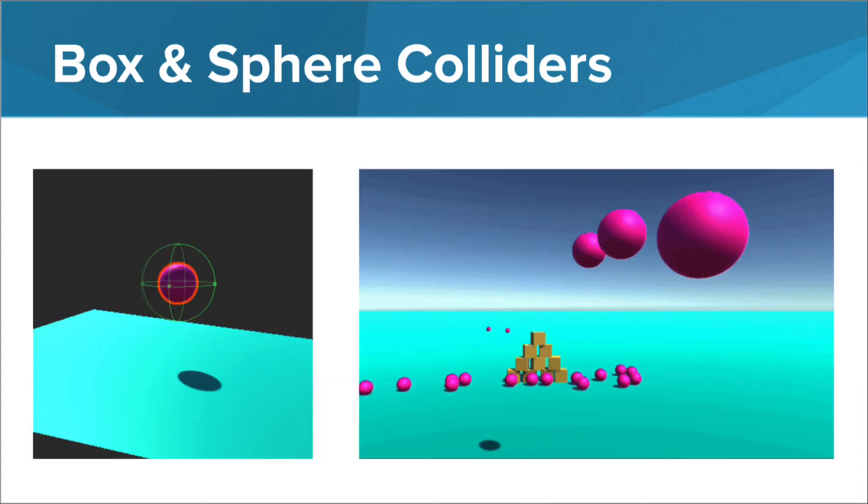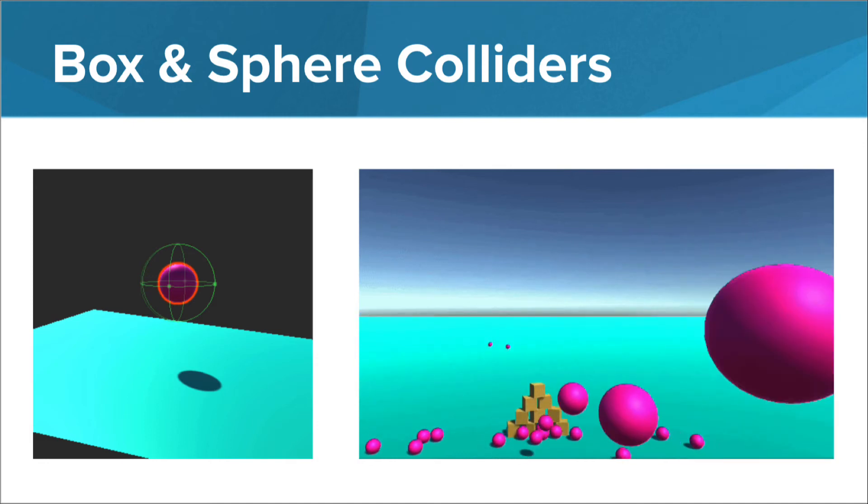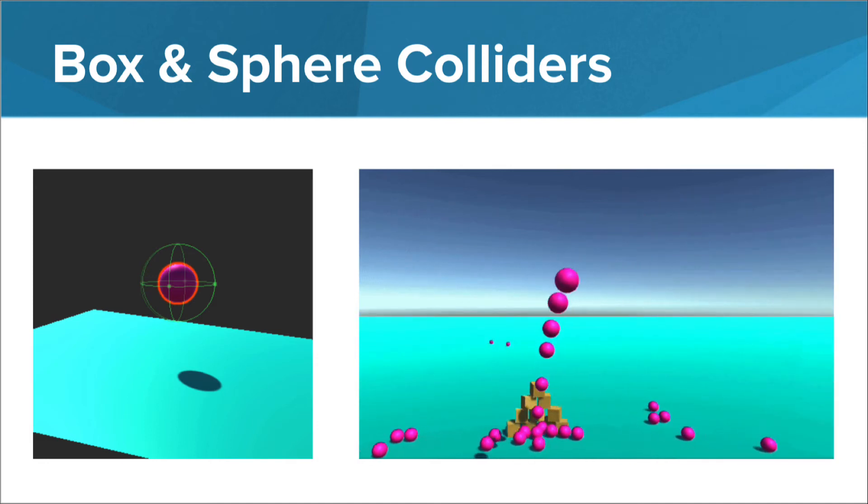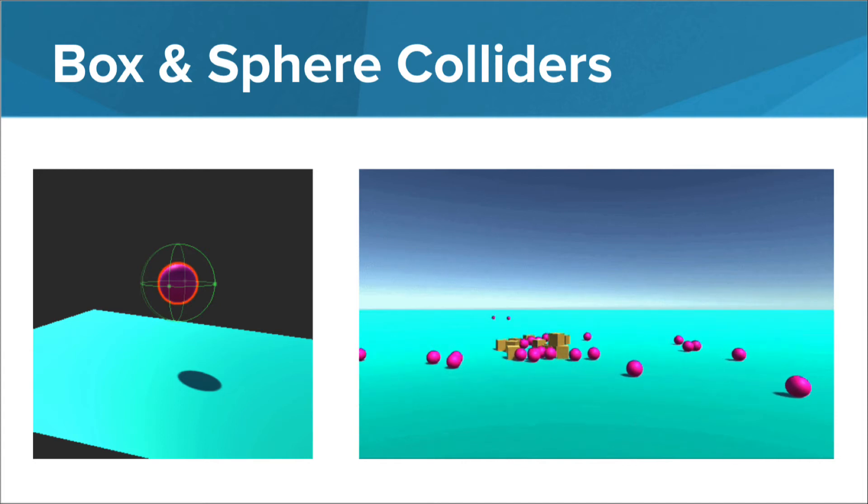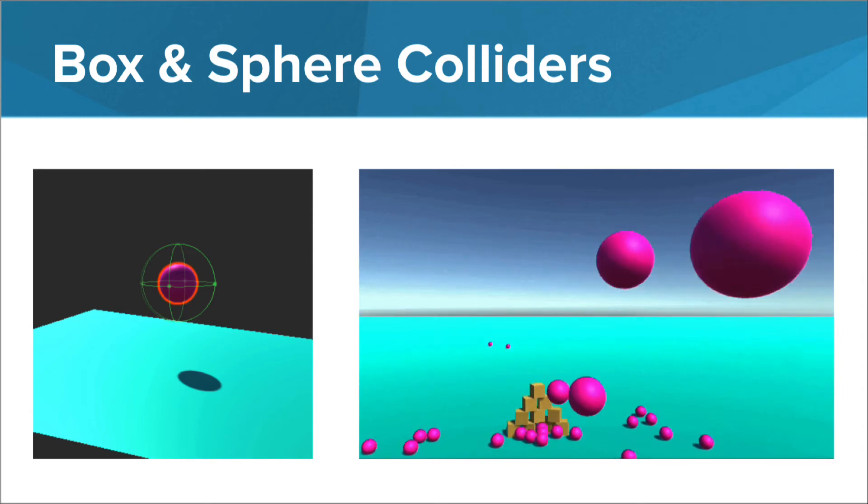On the left, you can see a sphere collider that's been added to a sphere rigid body game object. In the ball toss gameplay on the right, the sphere colliders on the balls collide with the box colliders on the pyramid of boxes.